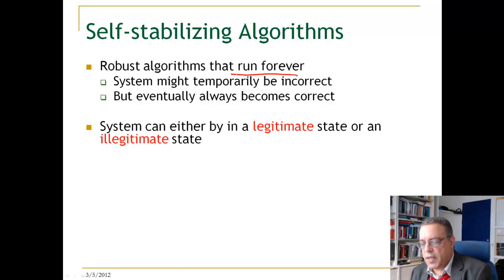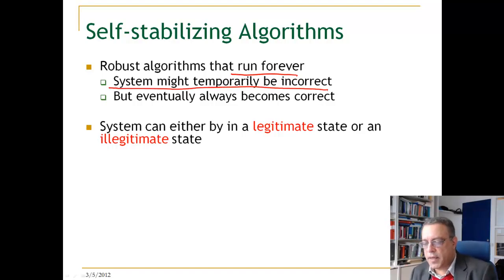Another class of algorithms are self-stabilizing algorithms. These are algorithms that run forever; sometimes they temporarily behave badly, but they always converge to good behavior. These are robust algorithms — the system might be temporarily incorrect, but it eventually always becomes correct.